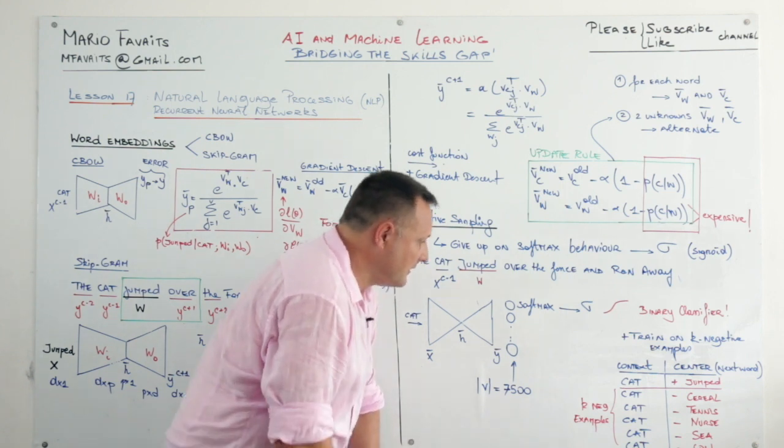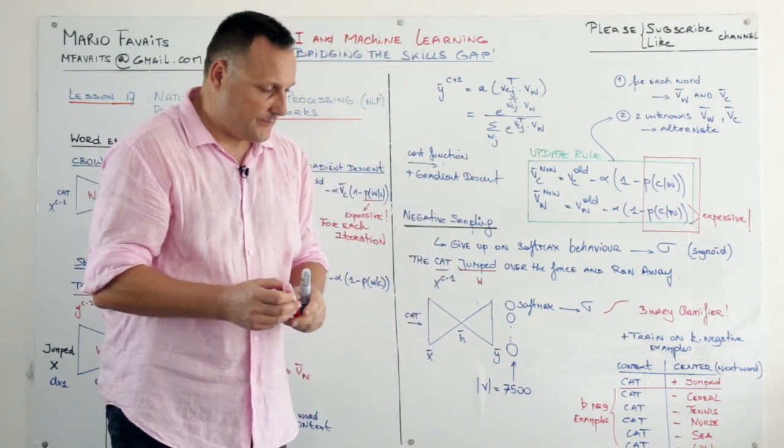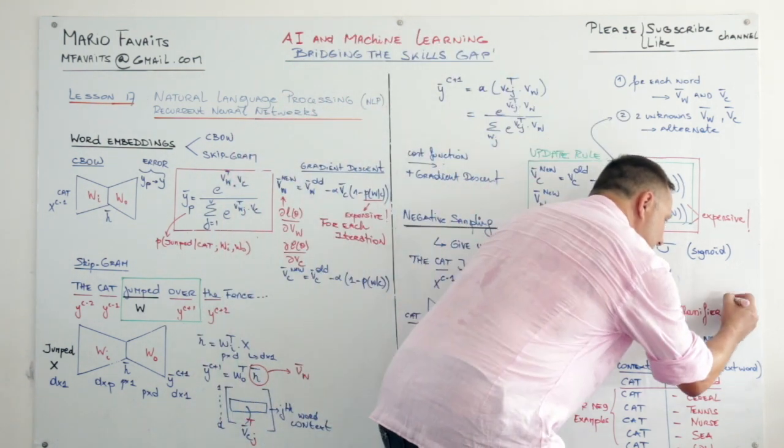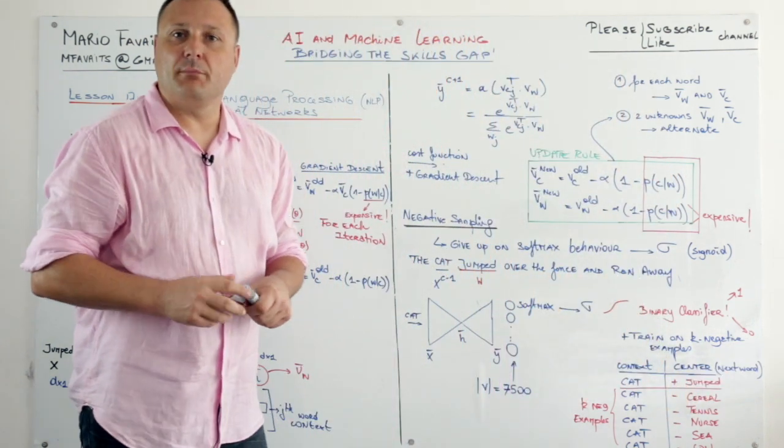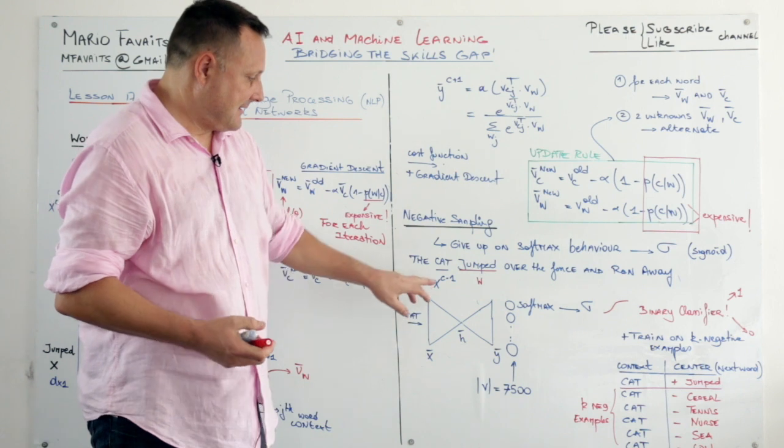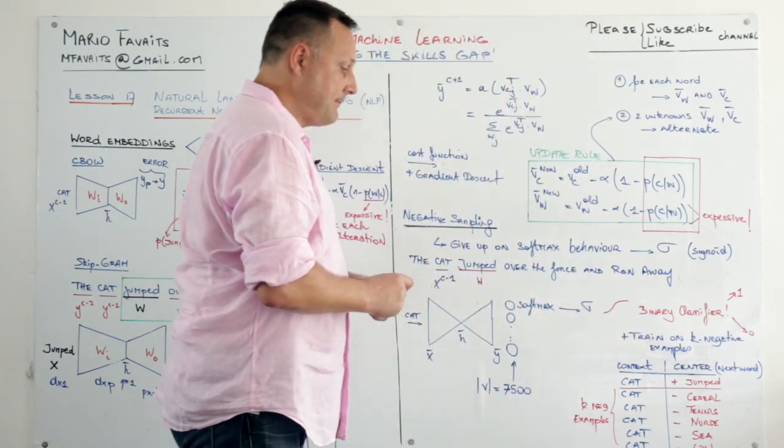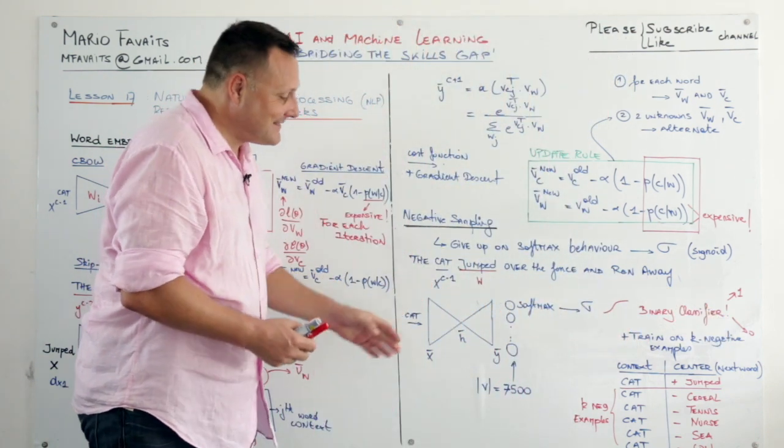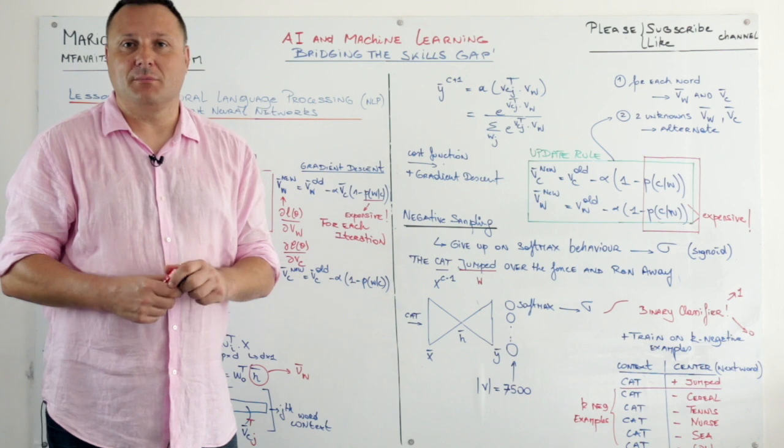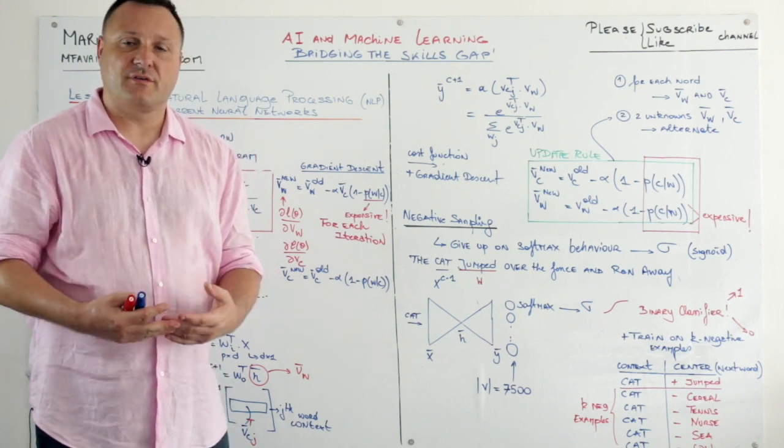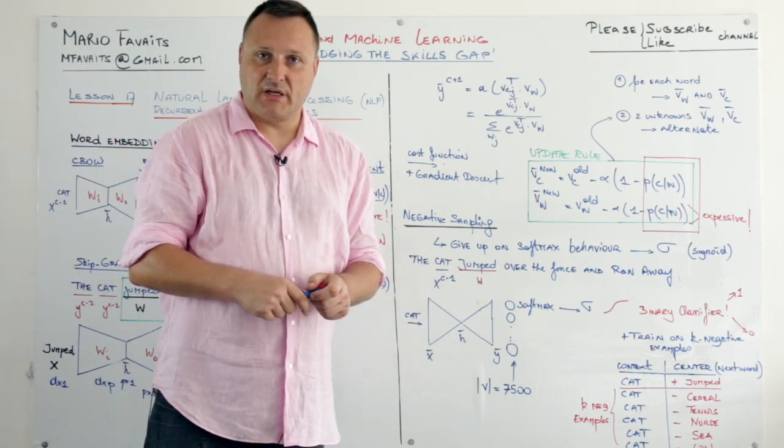So what we are going to do is replace the softmax by a binary classifier and give it a 1 if the combination is positive. That means that in this case cat and jump is a positive example. And we will put it 0 when there is a negative example. Now we still have these 7500 words. And most of them are going to be negative examples. There is going to be a lot more words that are not seen as a combination with cat than there are words that will be seen as a combination with cat.